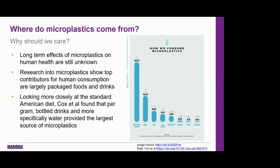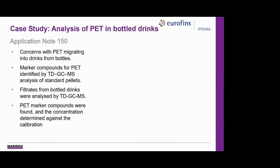Looking more closely at the standard American diet, in 2019 Cox found that per litre of sample, bottled drinks and most specifically bottled water provided the largest source of microplastics, which poses the question of how much of this plastic packaging is getting into the liquids inside. This brings me to our application note 150, where our collaborators at Eurofins Oproma demonstrated the use of thermal desorption for the analysis of polyethylene terephthalate, or PET, in bottled beverages, due to concerns it was migrating from the packaging into the drink.